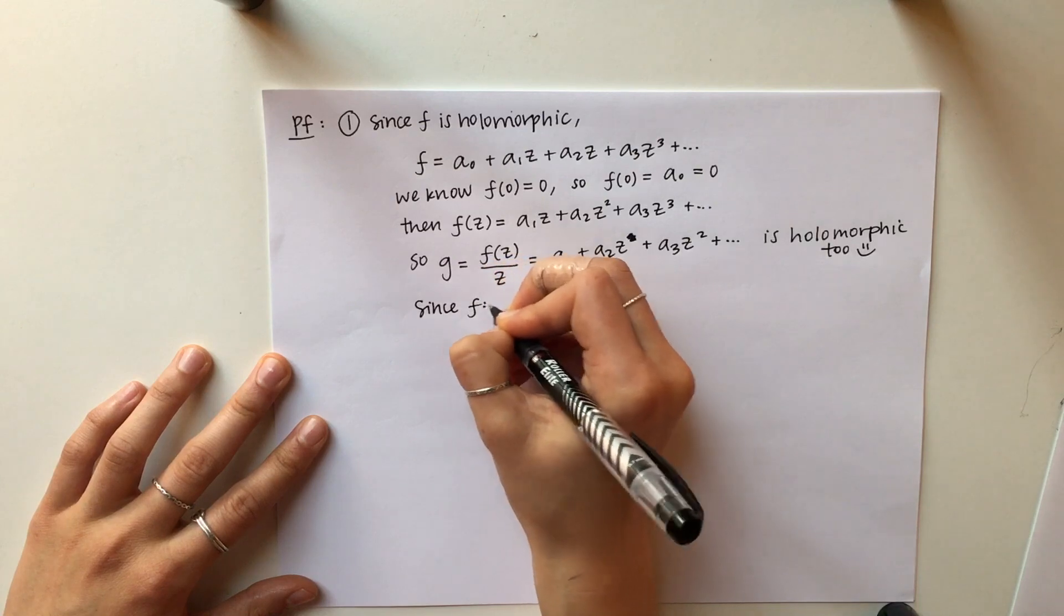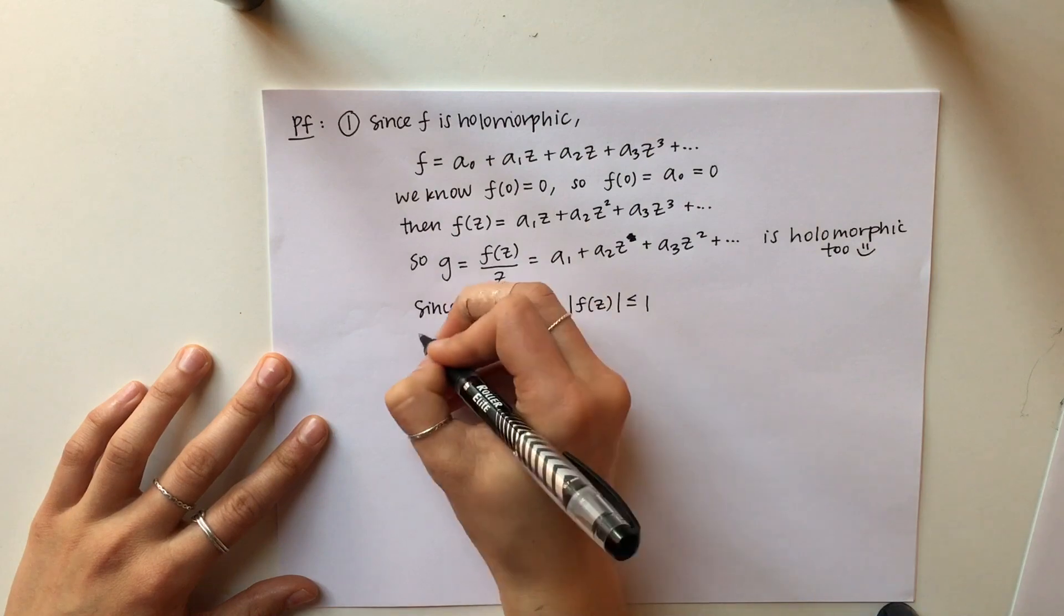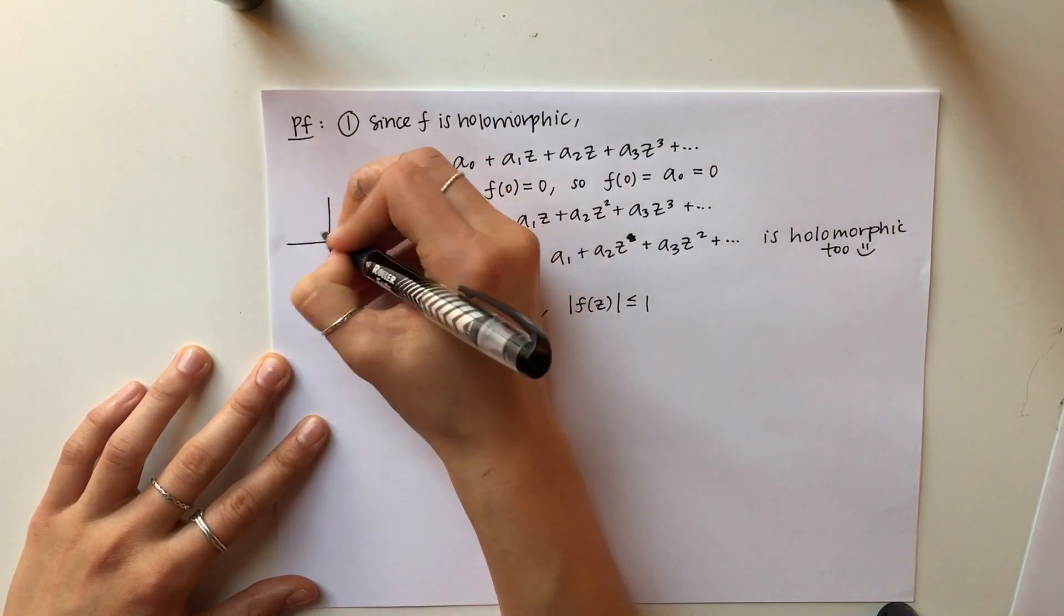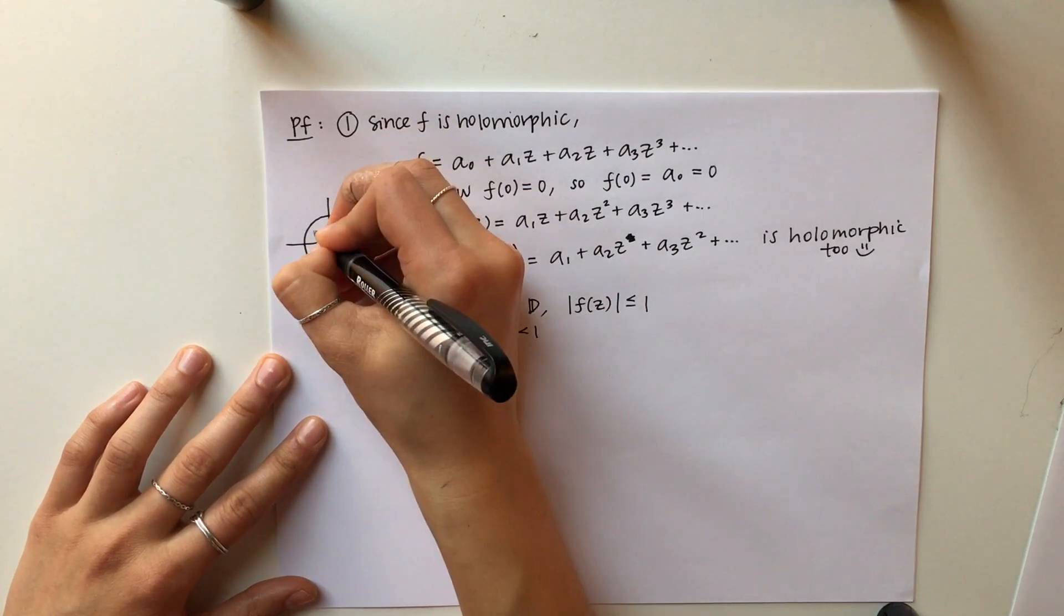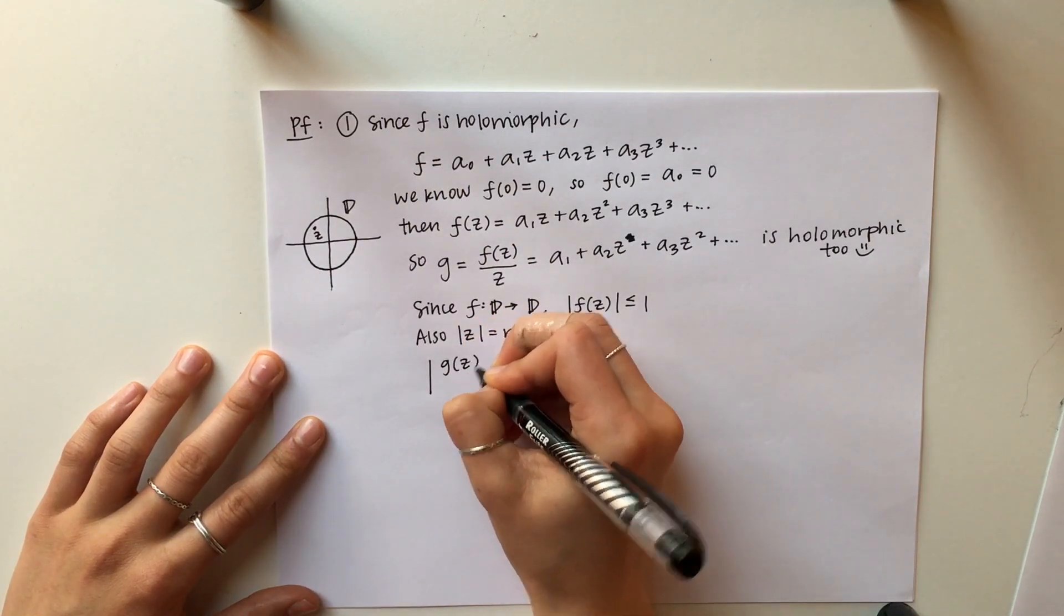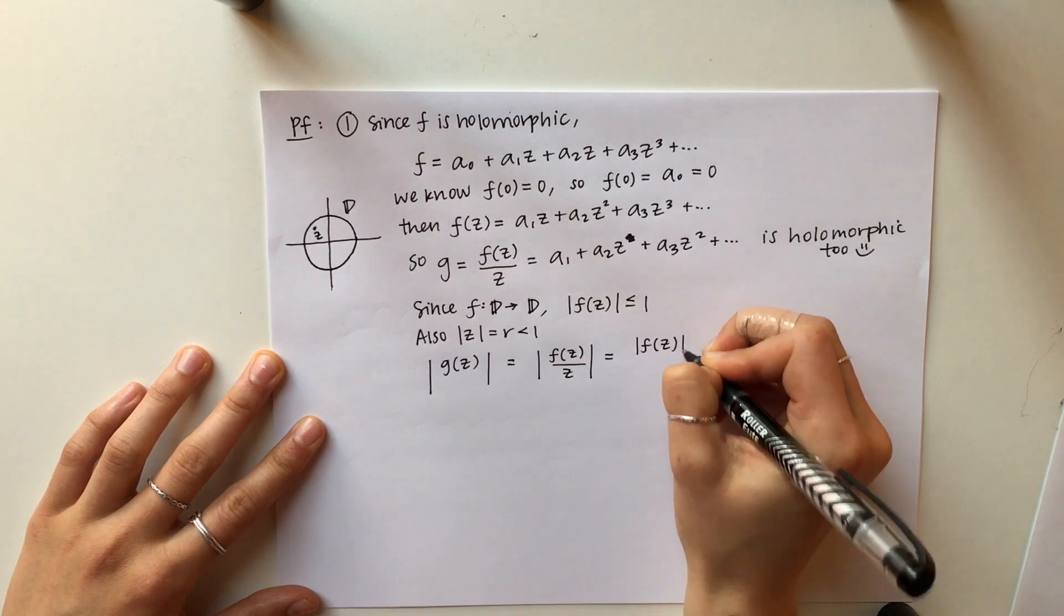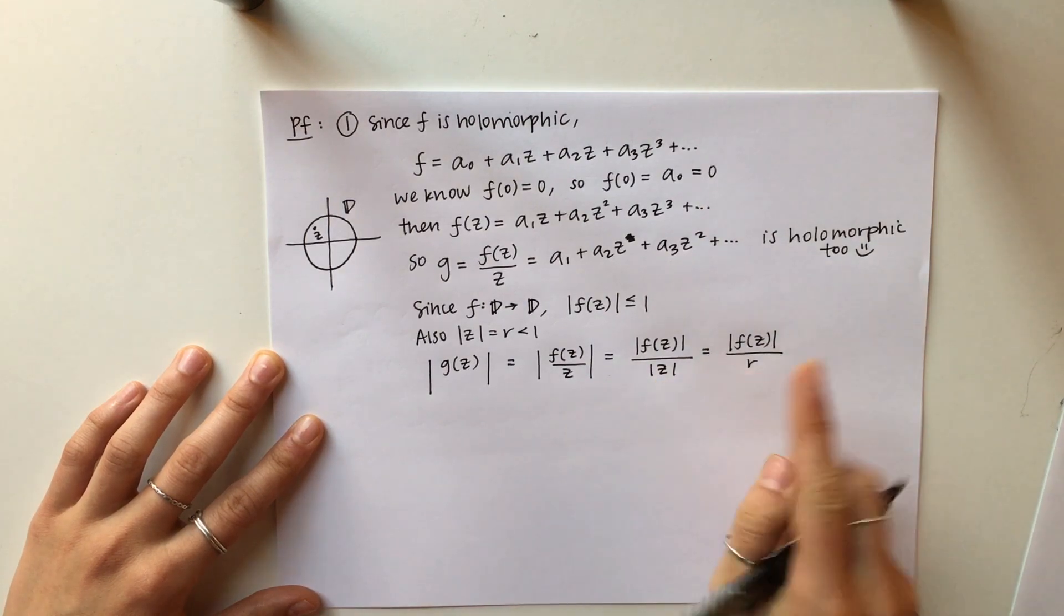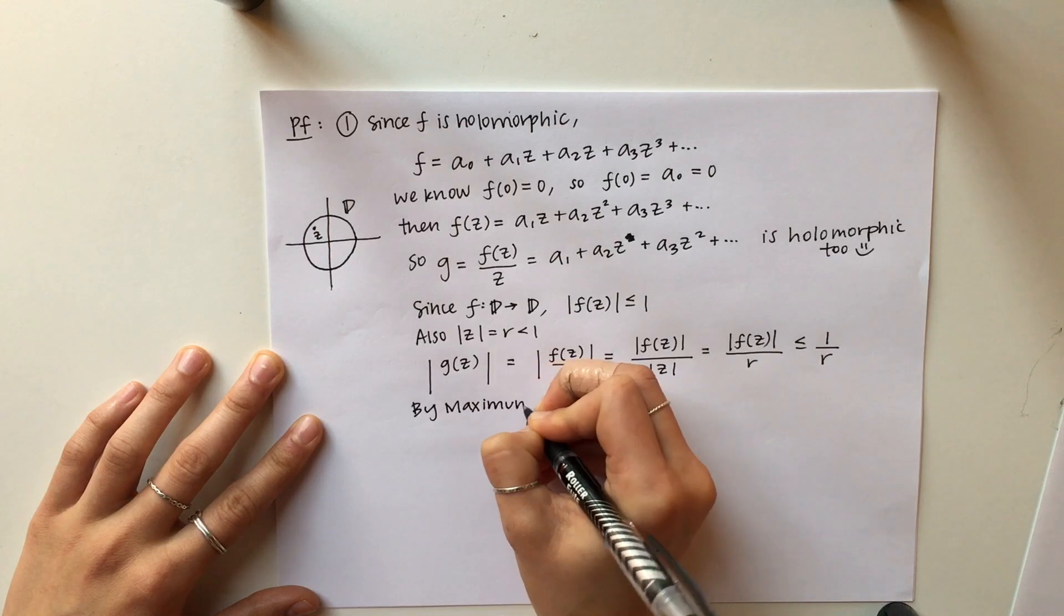Since F is a function from the disk to itself, we know that every output of F has to be bounded by 1. And also, we know that Z has to be bounded by 1. But specifically, since it is inside the disk, we can just assign wherever Z is equal to R, and we will see why in a second. So then the modulus of G is equal to the definition plugged in. And since the modulus of Z equals R, we're just going to set that equal to each other, and then we have that that whole thing is bounded by 1 over R.